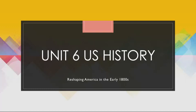Hi and welcome to Unit 6, where we will delve into the transformation of America in the early 1800s. We will be analyzing the causes and challenges of westward migration, explain the debate around the annexation of Texas, explore how the Mexican-American War helped the United States achieve the goal of Manifest Destiny, and describe the impact of the Second Great Awakening on the United States.